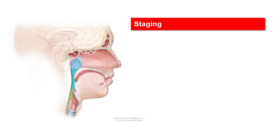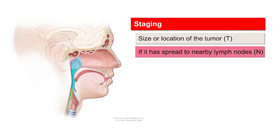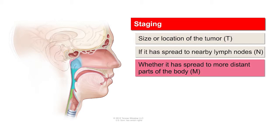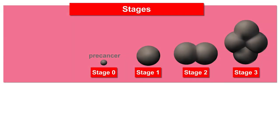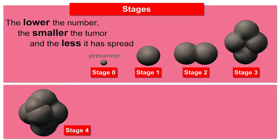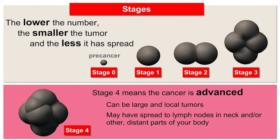Each cancer is staged based on the size or location of the tumor, if it has spread to nearby lymph nodes, and whether it has spread to more distant parts of the body. Stages range from stage 0 to stage 4. Generally, the lower the stage number, the smaller the tumor and the less it has spread. Stage 4 cancers are very advanced — they can be very large local tumors, or the cancer may have spread to many lymph nodes in the neck and/or to distant parts of the body.